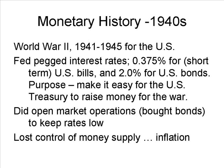The Fed achieved the peg by doing sufficient open market operations — that is, buying bonds. If it kept buying bonds, it would keep the yields of bonds down. Of course, the Fed could then not control its monetary policy, and the money supply would be expanded against the Fed's wishes. Later, high inflation caused the Fed to want to switch to managing the money supply. There was a power struggle between the Fed and the Treasury, which liked the peg policy because it kept borrowing rates low. Eventually, in the early 1950s, the Fed prevailed and got its monetary policy back.